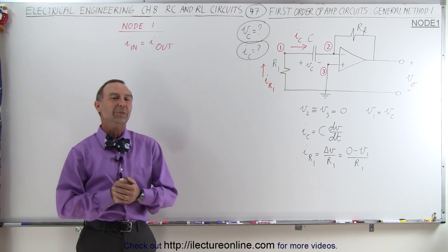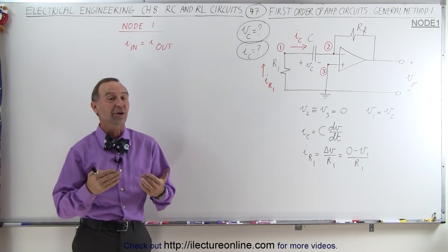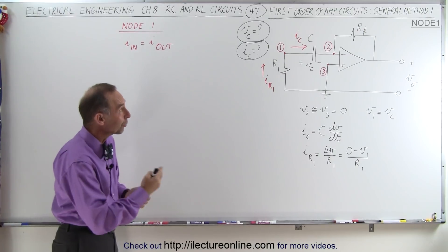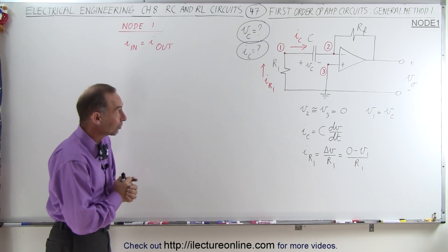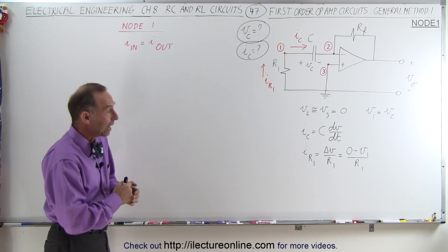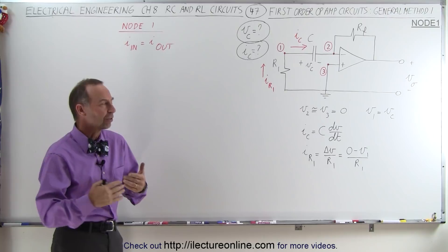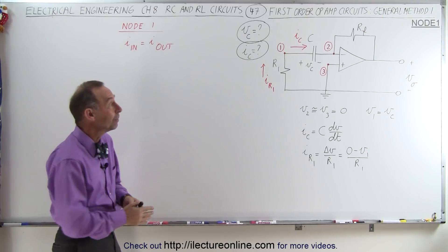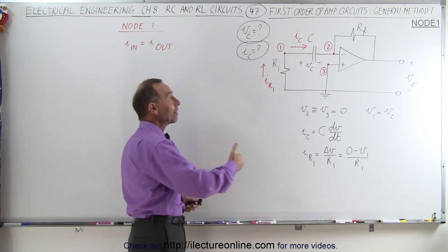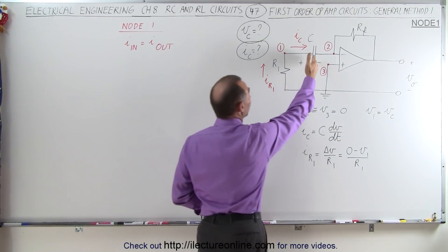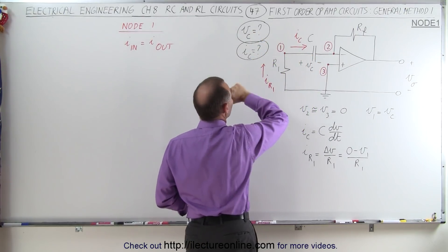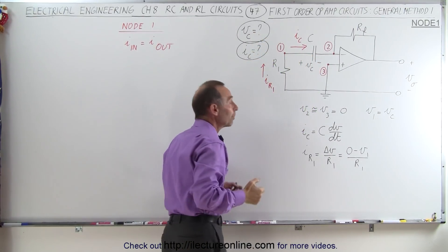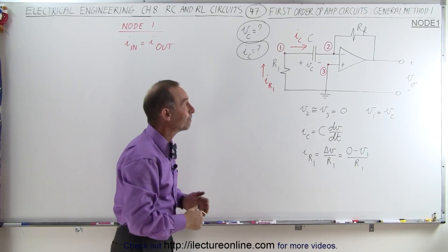Welcome to ElectronLine. We're now ready to start looking at some first-order amplifying or operational amplifier circuits, and we're going to show you some general methods of how to solve them. When we have a capacitor in the circuit, we would like to know the voltage across the capacitor and the current through the capacitor as a function of time.